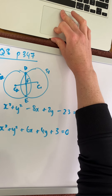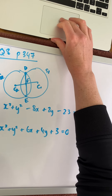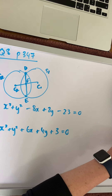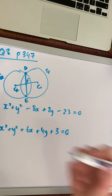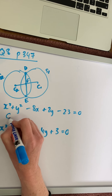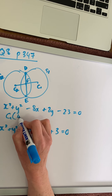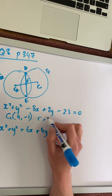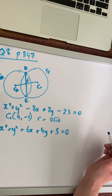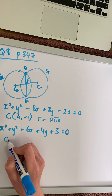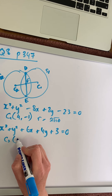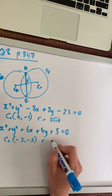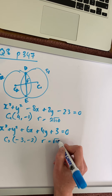In the question, we are first asked to find the coordinates of the two centers and the two radii. Using minus G, minus F and so on, center 1 is the coordinates (4, -1) and the radius is 2√10. Center 2 is the coordinates (-3, -2) and has a radius of √10.